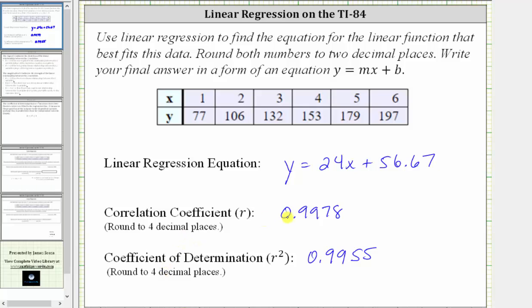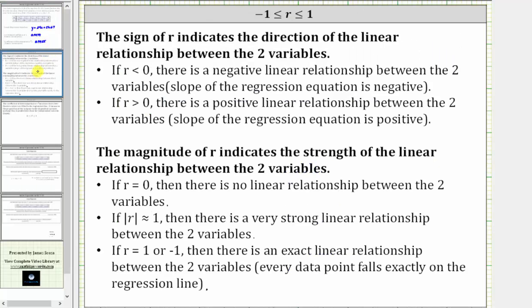Notice how r is positive, and the slope of the regression equation is also positive. The magnitude of r indicates the strength of the linear relationship between the two variables. If r is equal to zero, there is no linear relationship between the two variables.